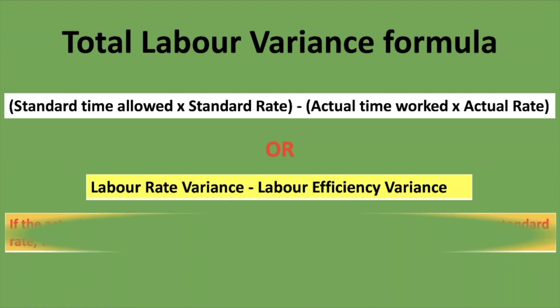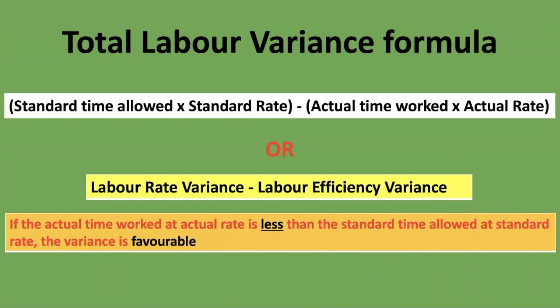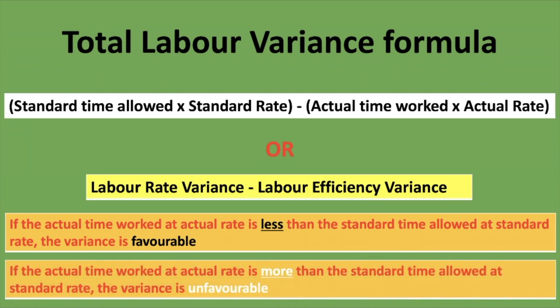If the actual time worked at the actual rate is less than the standard time allowed at the standard rate, the variance is favorable. We want actual time to be less than standard time allowed, and the actual rate to be less than the standard rate. Conversely, if actual time worked at the actual rate is more than the standard time allowed at the standard rate, the variance is unfavorable.